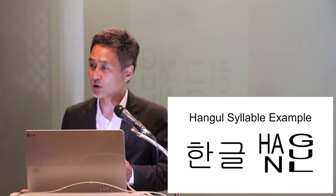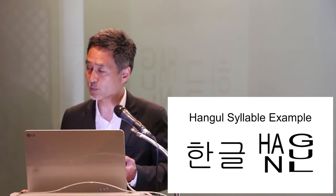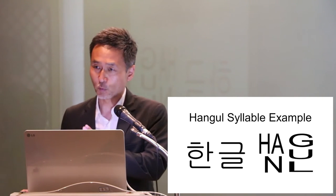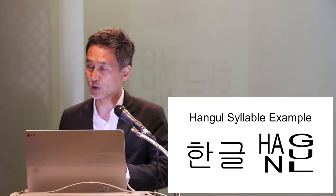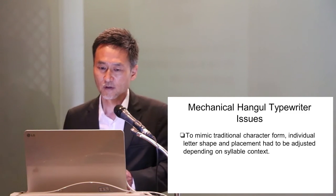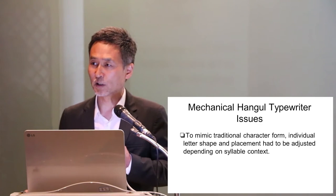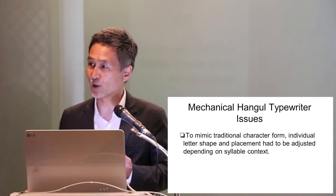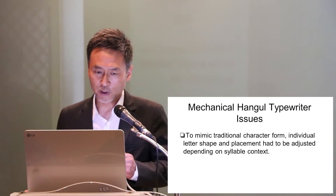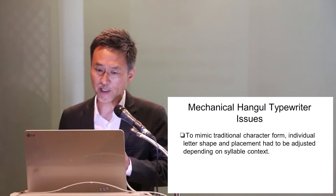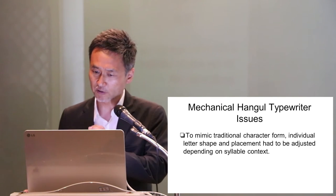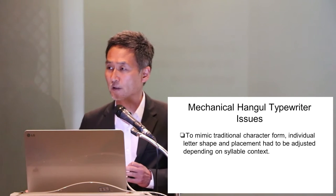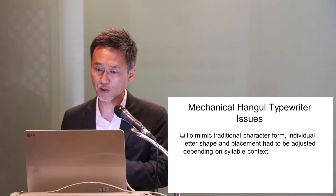Unlike in English, where even an experienced speaker may need a hyphenation dictionary to find where one syllable ends and the next begins, we don't have that problem in Hangul. In order to create a practical Hangul typewriter accepted by the public, early inventors had to mimic traditional character form — individual letter shape and placement had to be adjusted depending on the syllable context.